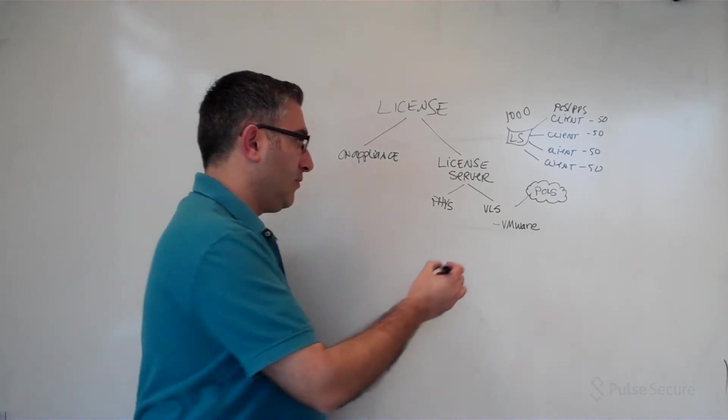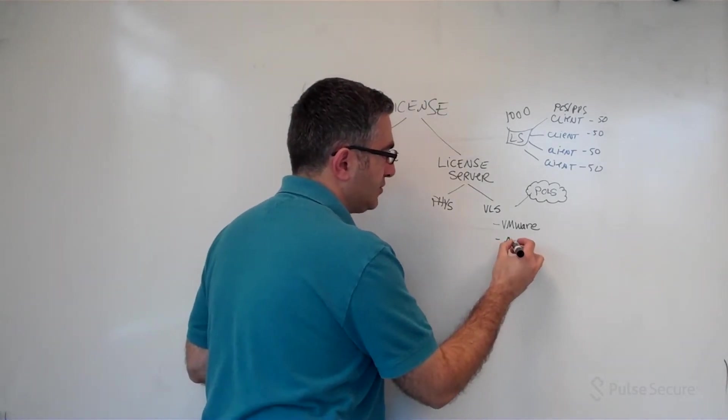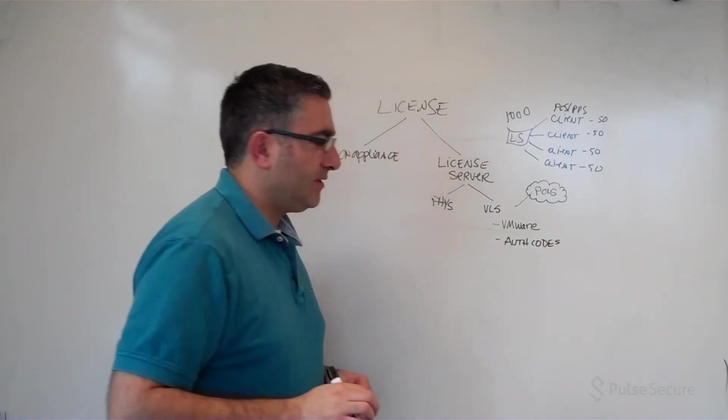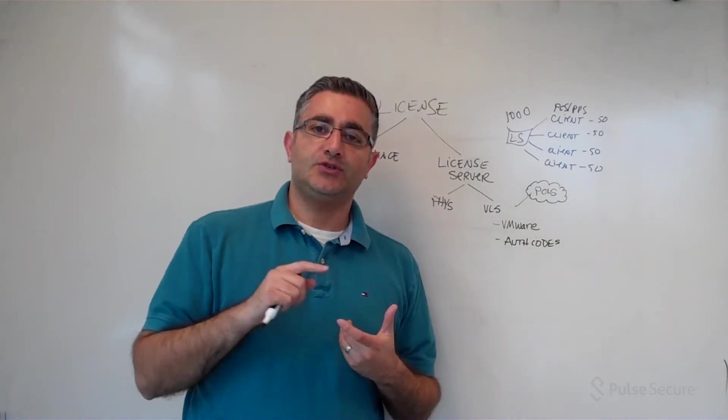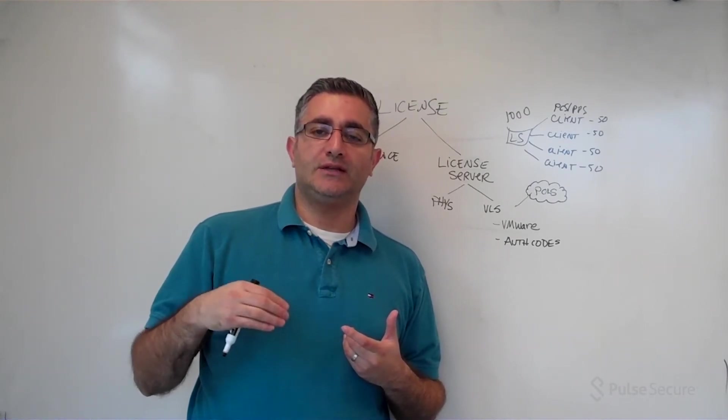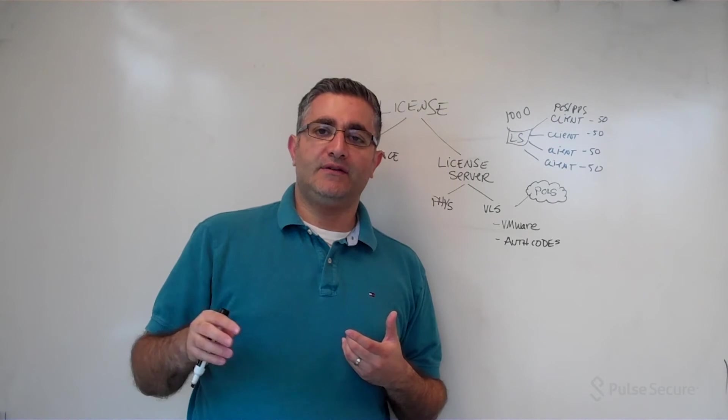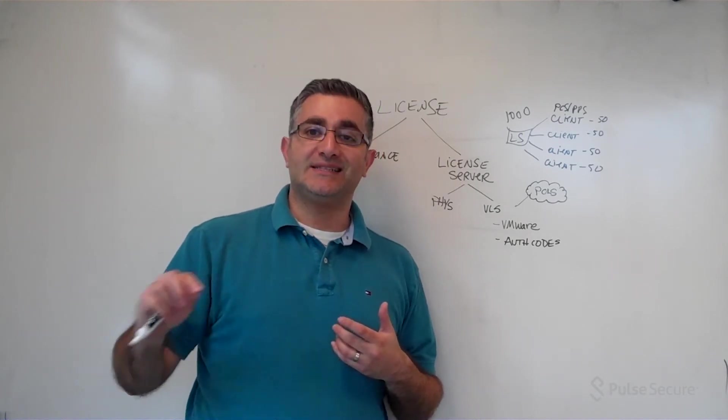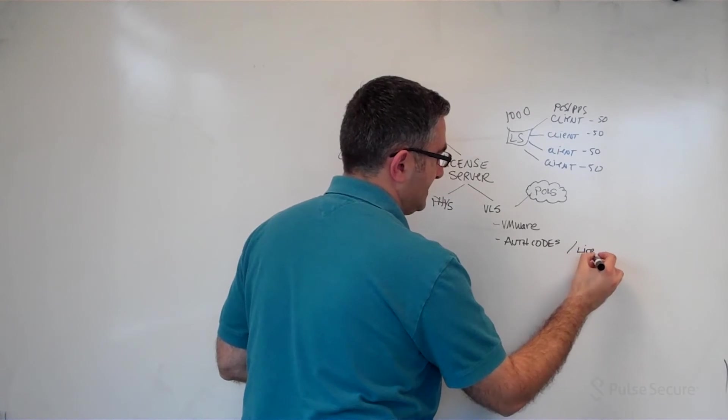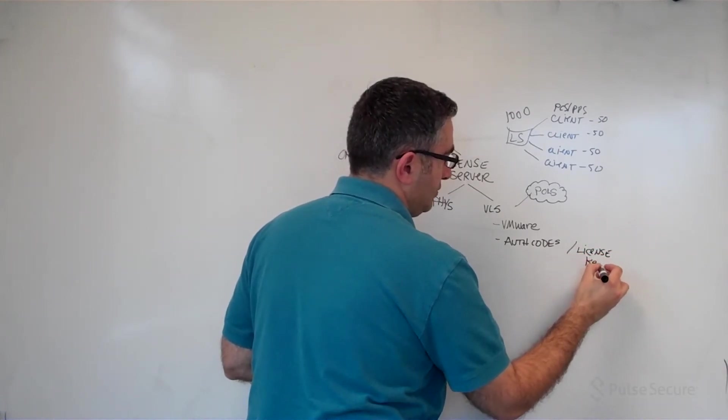So how does it actually pull these licenses? It does it a few ways. One is you can use auth codes. Auth codes are basically a string that you go into our licensing server or license authority, and then from there you generate a license key.